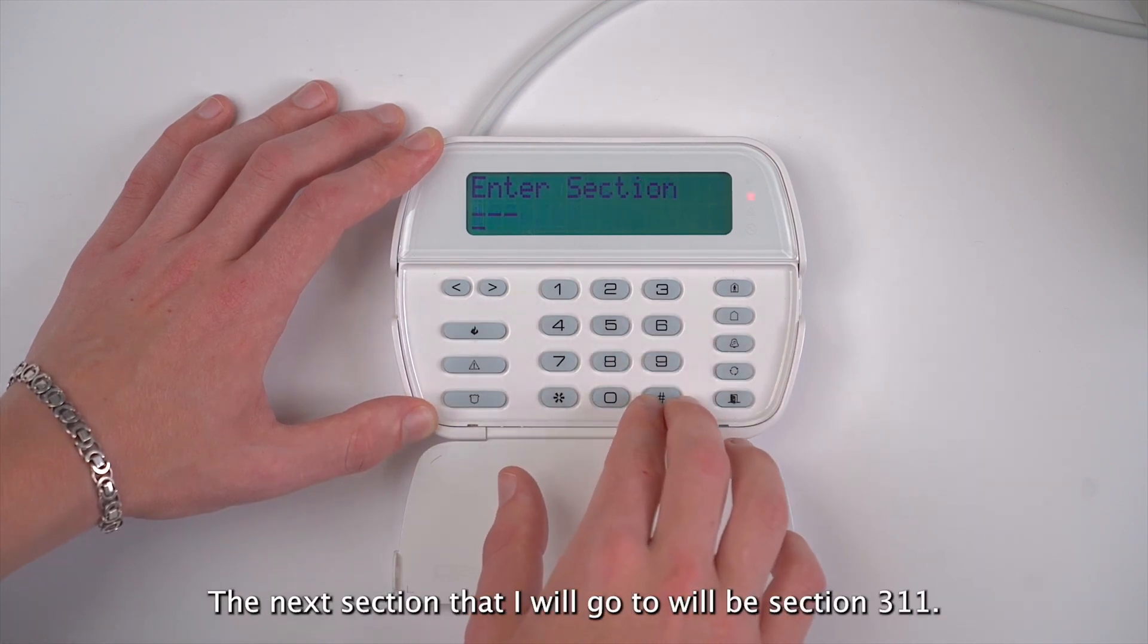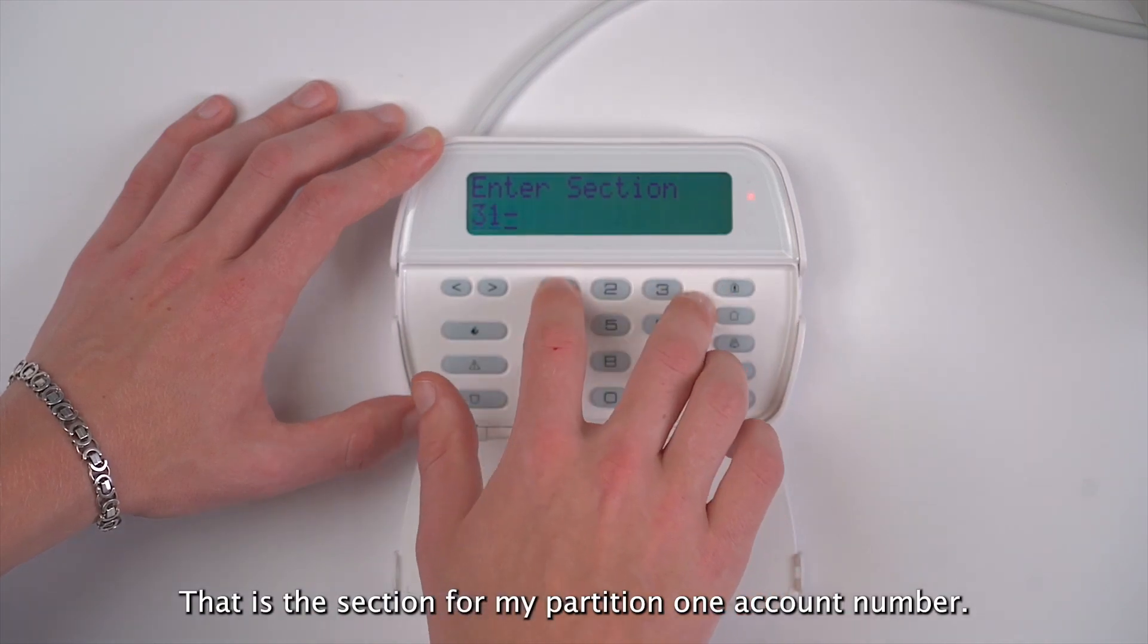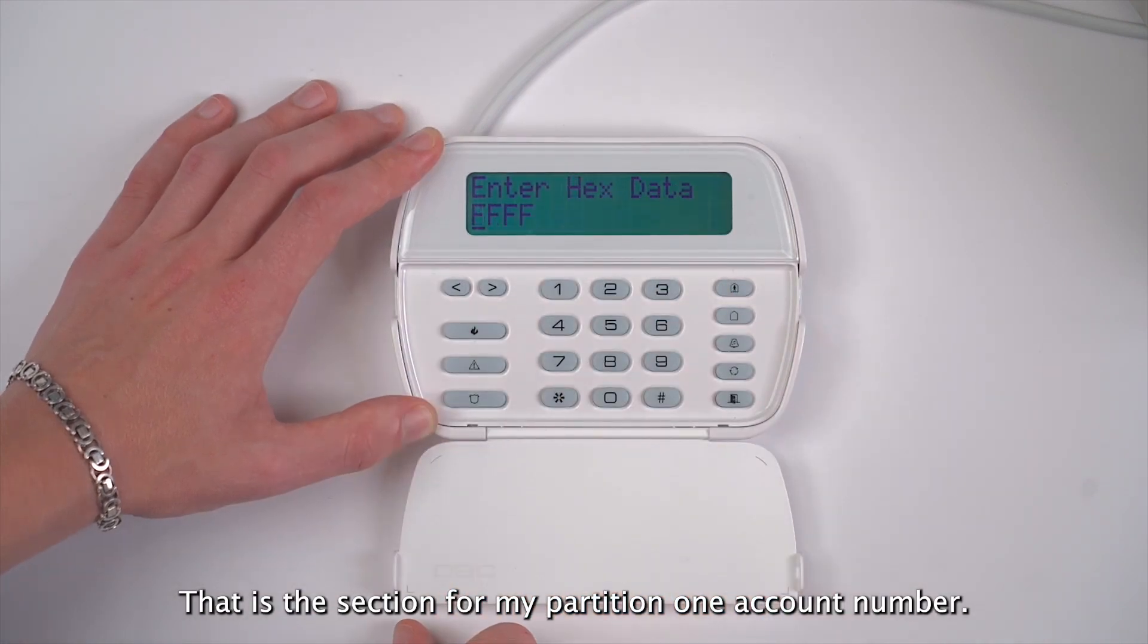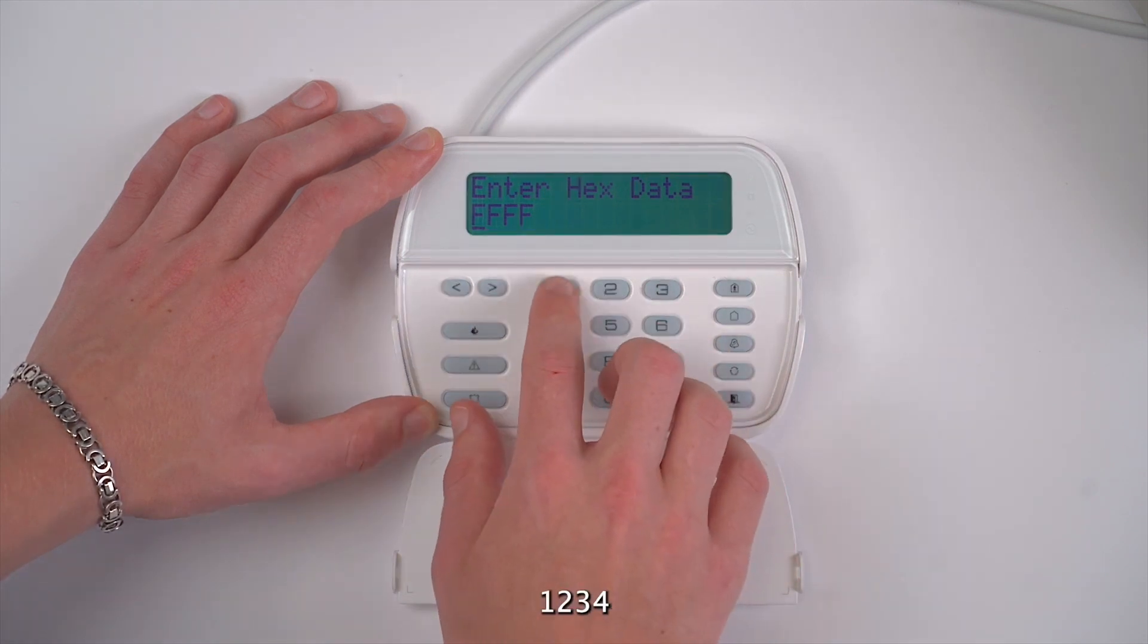The next section that I will go to will be section 311, and that is the section for my partition 1 account number. I will once again enter 1234.